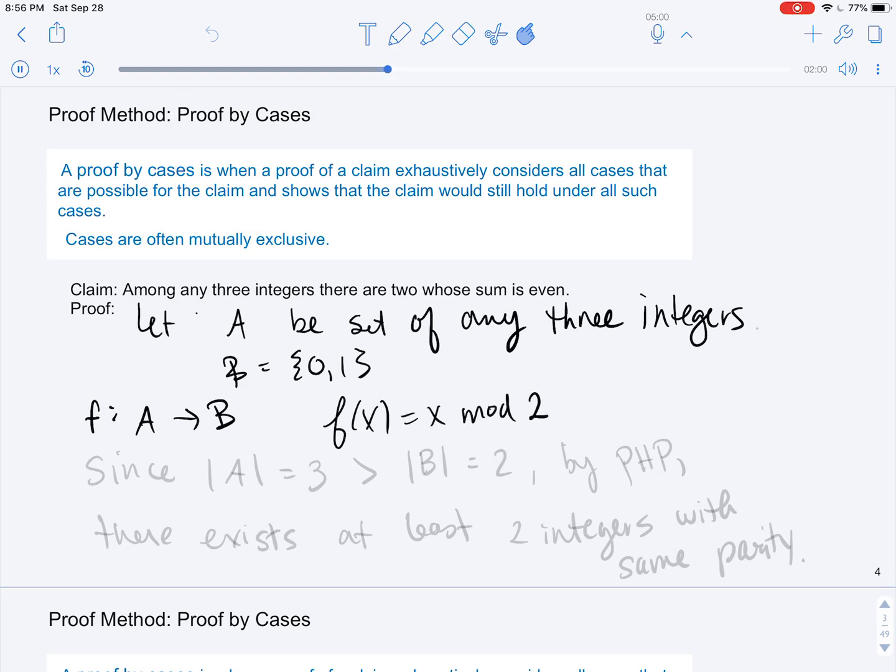This will turn out to be the parity of the integer, because if the integer X is 0 mod 2, that means it's even, and if it's 1 mod 2, it's odd. So since we have three integers that are being mapped into two parities, and both of those sets are finite, by the pigeonhole principle, there exists at least two integers with the same parity.